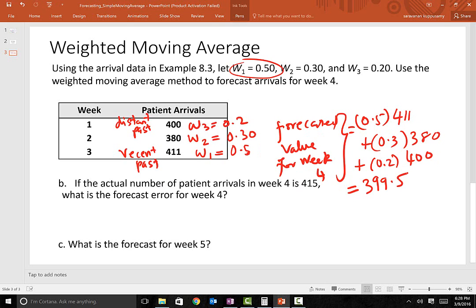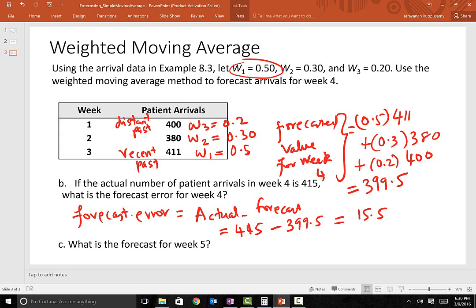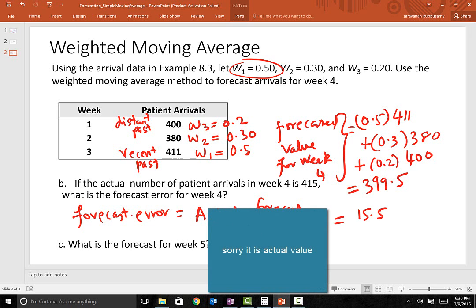So what is the forecast error for week 4? It's actual minus forecasted value. In this case, actual is 415, and forecasted value is 399.5. The error is 15.5.